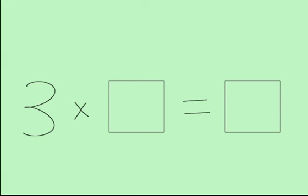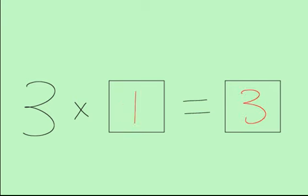Alright, let's get started with our 3 times table. 3 times 0 equals 0. 3 times 1 equals 3. 3 times 2 equals 6.